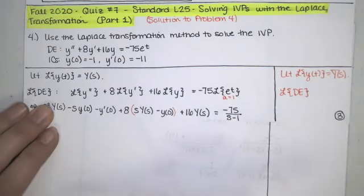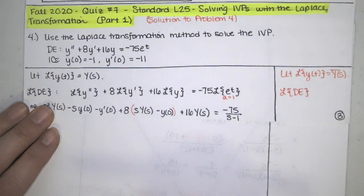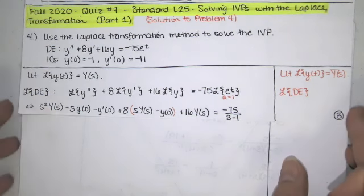In this video we solve problem number four from quiz number seven in the fall 2020 semester in the elementary differential equations class. This is a single problem corresponding to standard L25, which is solving simple IVPs with the Laplace transform. In this standard, the differential equation will always have constant coefficients and the right-hand side will be relatively simple — no delta functions, no convolutions. We're solving a simple constant coefficient differential equation subject to initial conditions prescribed at t equals zero.